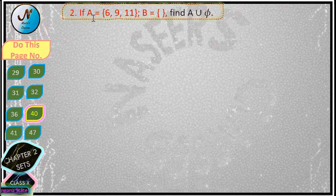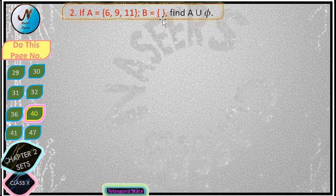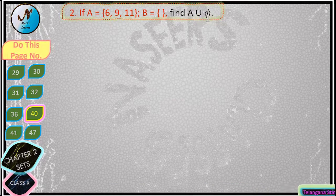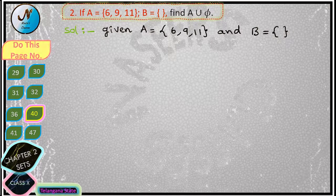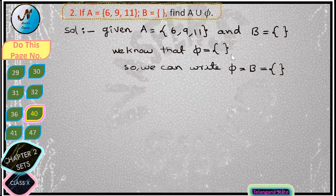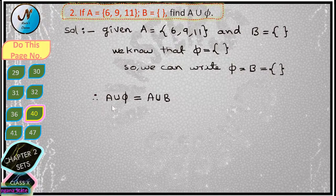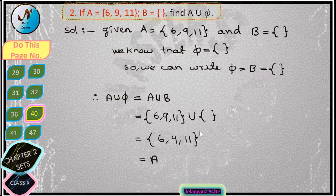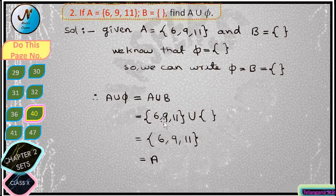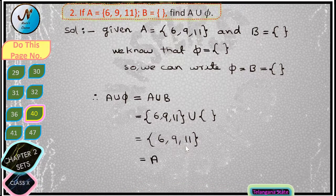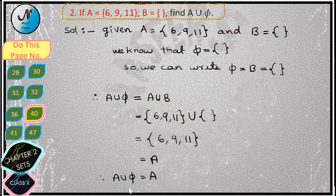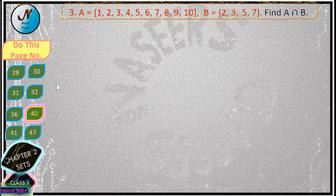Now we solve the second problem. Given that A is equal to {6, 9, 11} and B is equal to the null set, find A union π. We already know that π is equal to the null set, so we can write π equal to B equal to null set. Therefore, A union B is equal to A union π, which is equal to {6, 9, 11} union null set. Union means all together, so this is just {6, 9, 11}, which is nothing but set A. Therefore, A union π is equal to A.